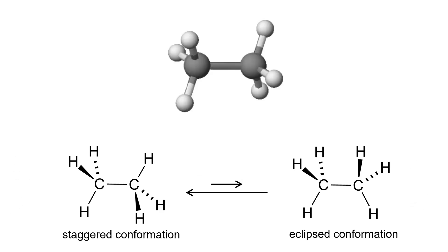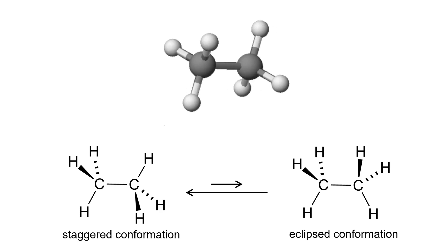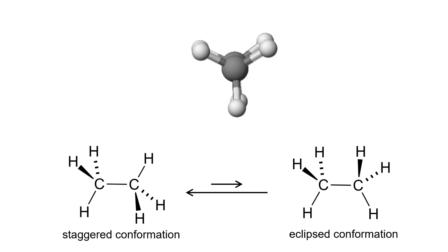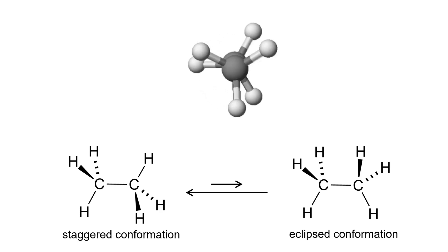Here I'm showing a video of rotation about the central carbon-carbon bond. As it rotates, the molecule cycles between staggered and eclipsed conformations, moving through lower and higher energy levels. From this perspective it isn't easy to see the relationships between the front and back hydrogens. If we rotate the molecule and look down the central carbon-carbon bond, we can see these relationships much more easily — cycling between staggered and eclipsed conformations, staggered, eclipsed, and back to staggered.